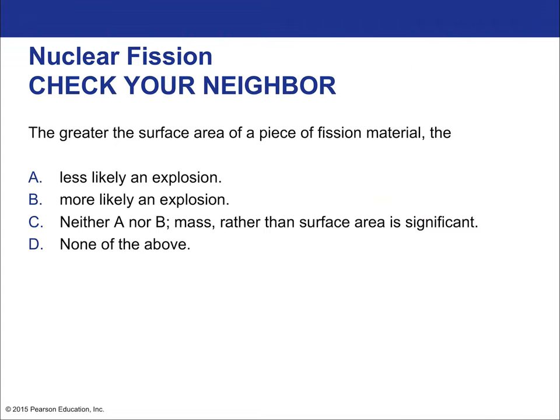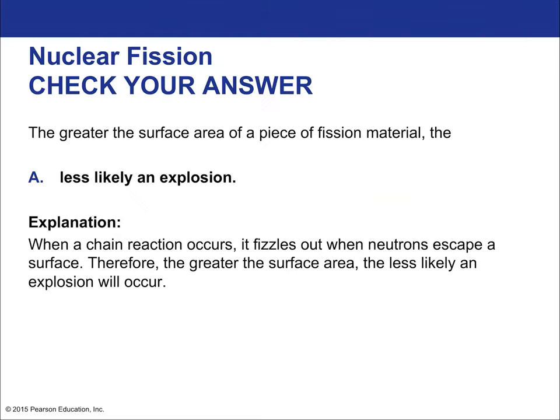The greater the surface area of a piece of fission material relative to its volume, the less likely an explosion. Not all shapes have the same surface-area-to-volume ratio. A sphere gives the minimum surface area for a given volume, while a sheet geometry would have significantly more surface area for the same volume.